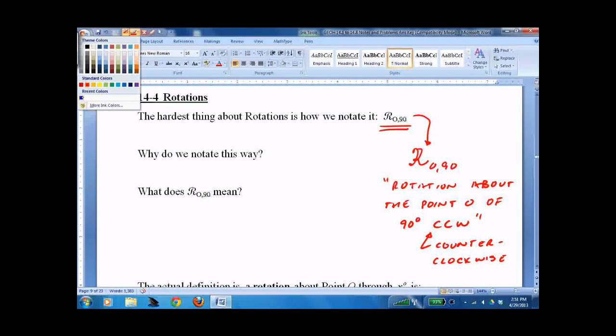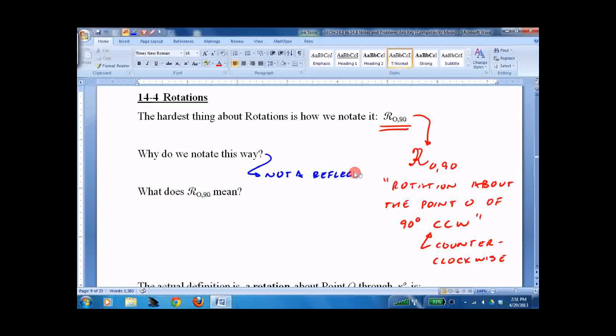So the big question is why the script R? Well we do that so it's not a reflection, which is a regular R. It looks something like that. Reflection through line K of A is so on and so on. So this is what it means over here.